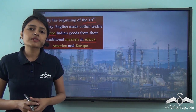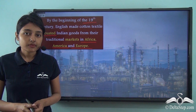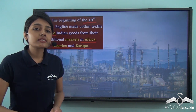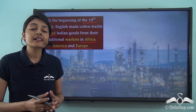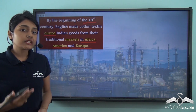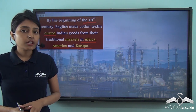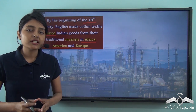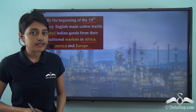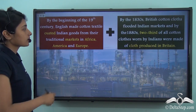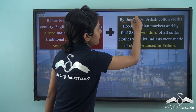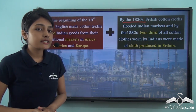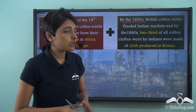The Indian textile producers were also faced with stiff competition, because it became difficult for them to compete with European textile producers who had access to machines. By the beginning of the 19th century, the Indian cotton textile producers were severely affected in the international markets. And along with this, the worst came by the 1830s. By the 1830s, British cotton cloth flooded Indian markets.